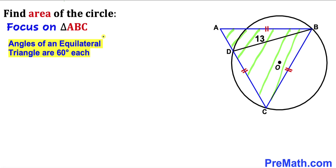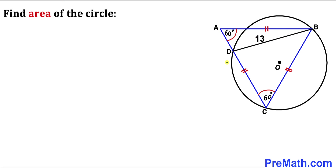Let's recall the crucial fact: angles of an equilateral triangle are 60 degrees each. So all three angles of this equilateral triangle are 60 degrees each. Now let's connect center O with vertices B and D, as shown in the next diagram.